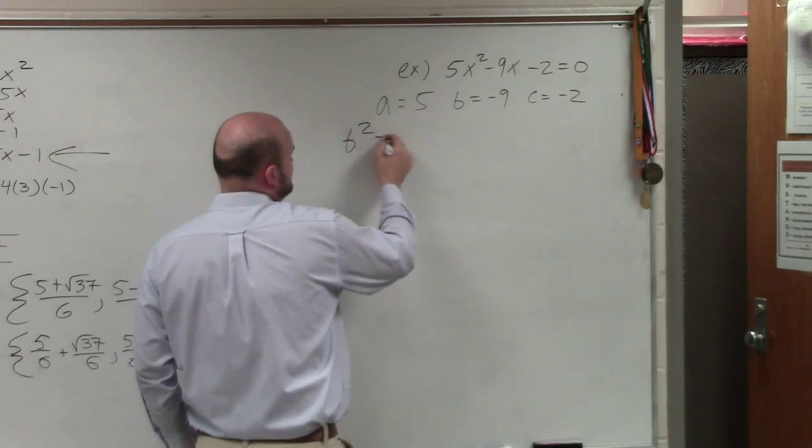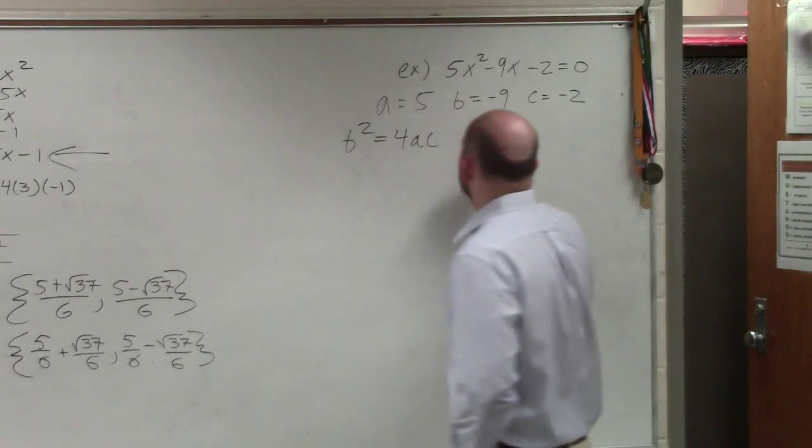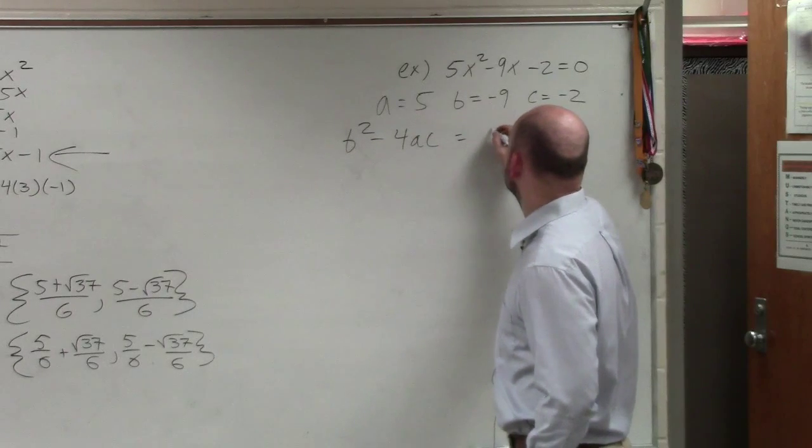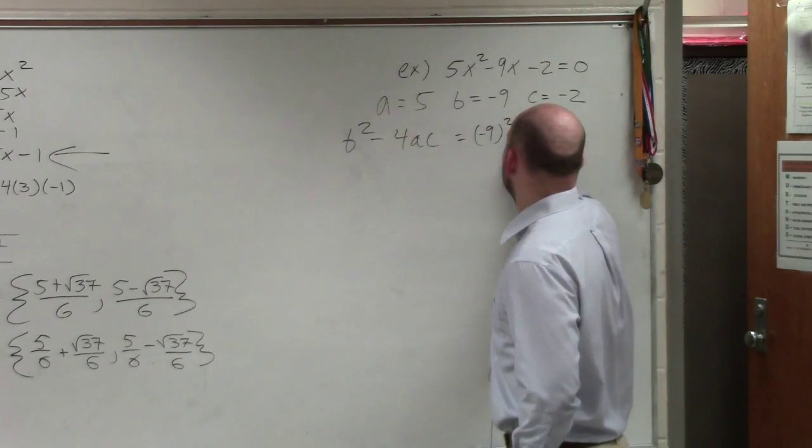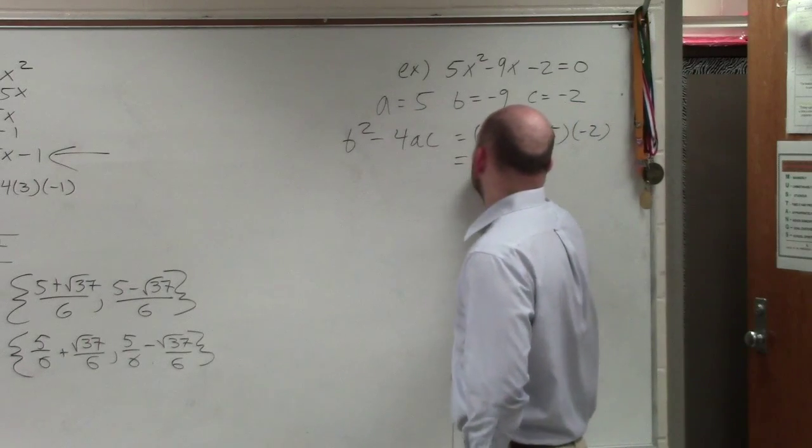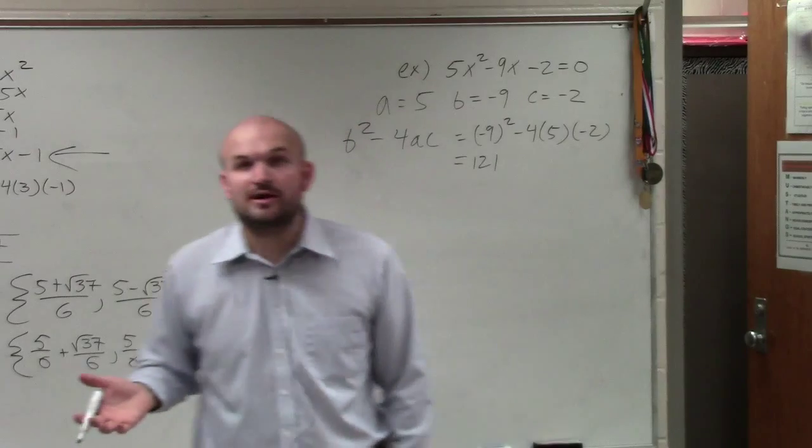Find my discriminant first. b squared minus 4 times a times c. So therefore, that's going to be negative 9 squared minus 4 times 5 times negative 2. And we got 121, right? Which we said was a square number.